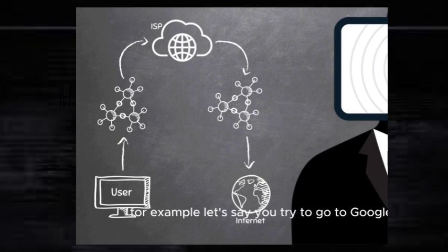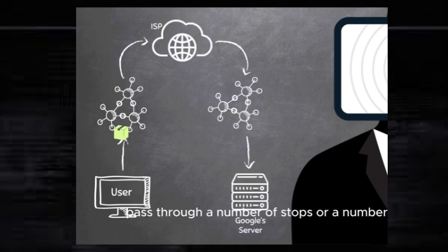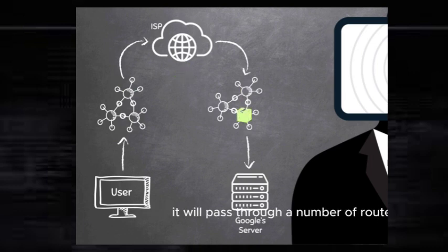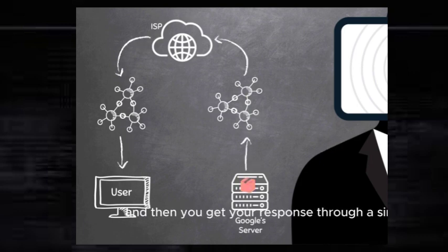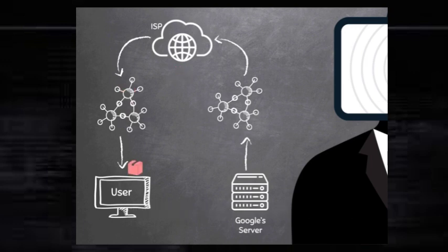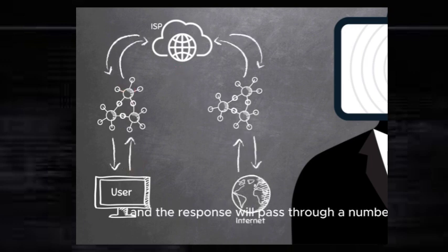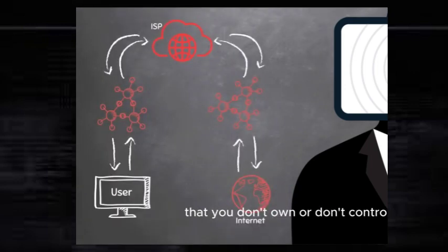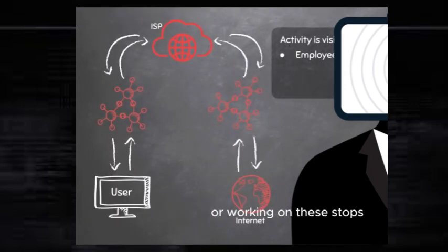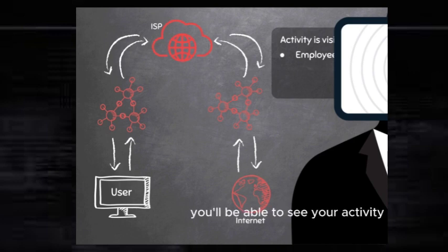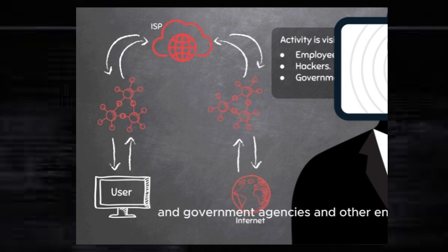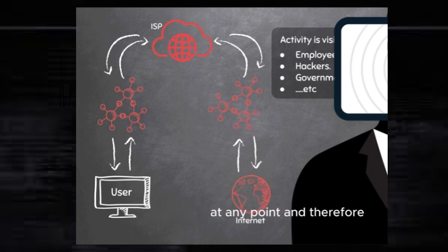For example, let's say you try to go to google.com. This request will first pass through a number of stops or routers, it'll go to your internet service provider, then pass through more routers and stops, and eventually reach Google's servers — which are not controlled by you — and then you get your response through a similar route. Both your request and the response will pass through a number of stops that you don't own or control. Anybody operating these stops will be able to see your traffic and your activity. Hackers, government agencies, and other entities can possibly intercept these requests and responses at any point, and therefore your privacy is gone.